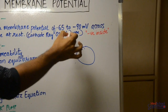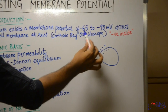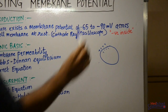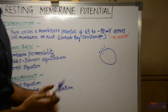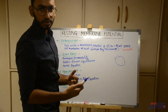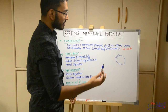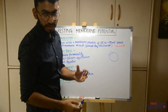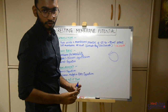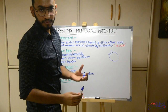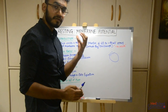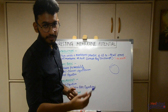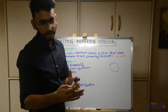If you notice, the description says it ranges from minus 65 to minus 90 millivolts. There is a range because different tissues or different cells have different values of resting membrane potential. For example, a large myelinated nerve fiber has a value of minus 90 millivolts, while an RBC has a value of minus 5 millivolts.